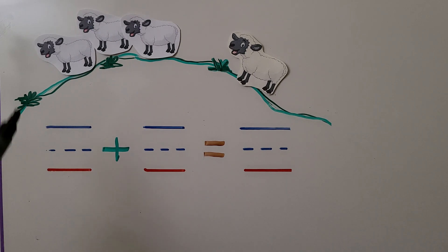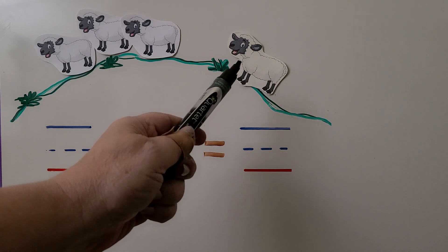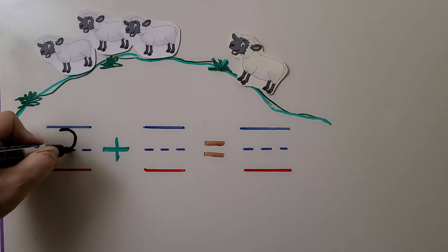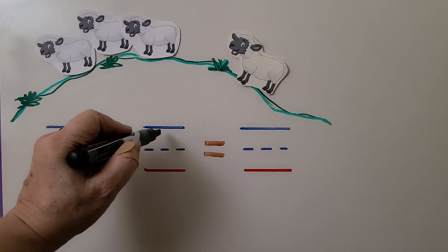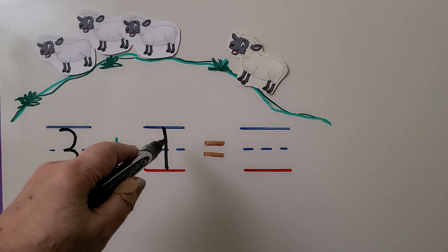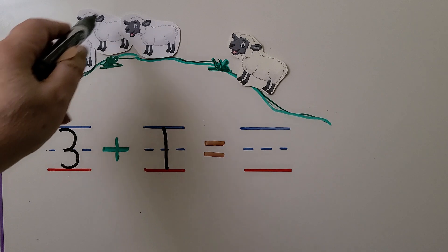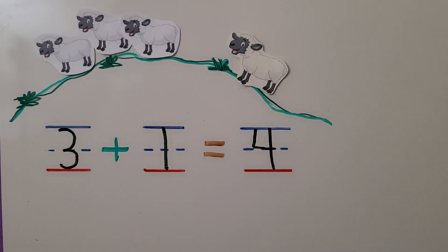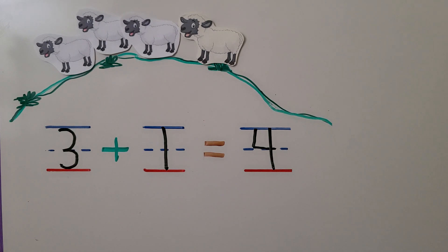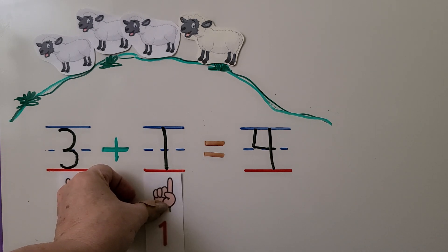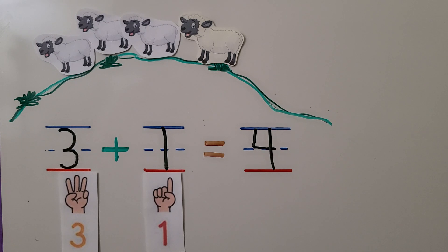Let's try another one. There were three sheep on a hill. One more sheep comes to the hill. How many sheep are on the hill now? We write one, two, three sheep that were on the hill, and in this space we write how many come — that was one more. We put three and one together: three plus one is four. It's three and one more. There are four sheep on the hill. Make sure to count both groups.